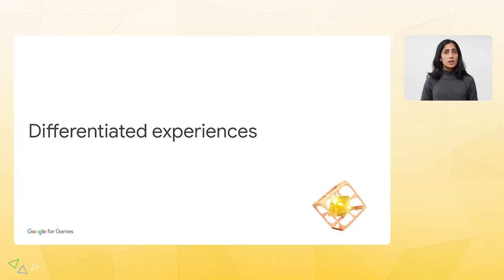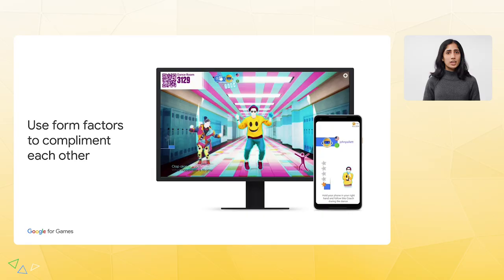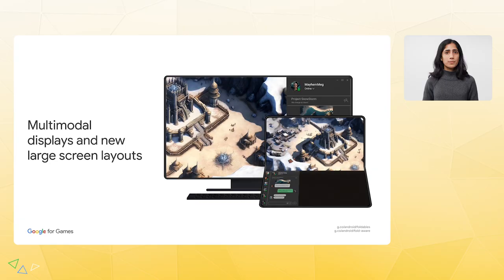We've discussed what you can do today to optimize games across different device types. Now let's take a peek into the future for other features platforms can take advantage of. While these are not required for a great game, they can offer delightful experiences. One option is making games playable simultaneously across different form factors — for example, with Just Dance, you can use your phone to record your movements while the game plays on a desktop. Another idea is having new layouts that take advantage of the larger screen in novel ways, like multimodal displays with embedded menus or maps, or tabletop experiences for foldables.